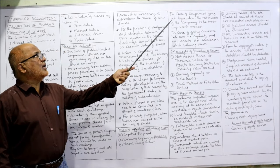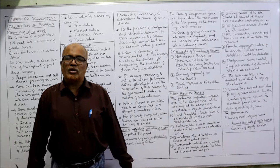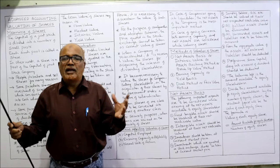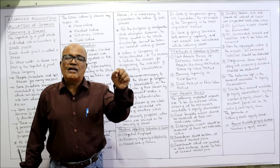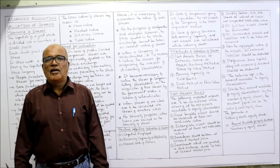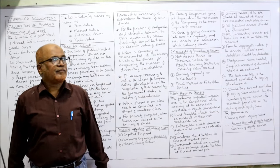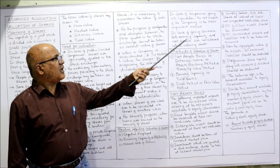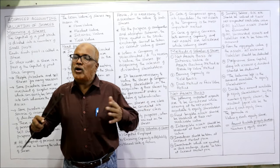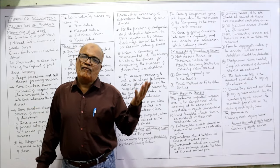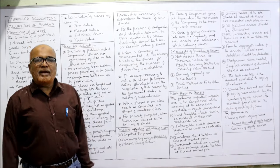In case of companies going into liquidation or amalgamation or absorption, the net assets of the company are most important. When a company goes into liquidation, it is better to consider net assets to calculate the value of the share — that means the intrinsic value method is the best method for a company being wound up. In case of a going concern, both earning capacity and net assets are considered for valuation of shares.